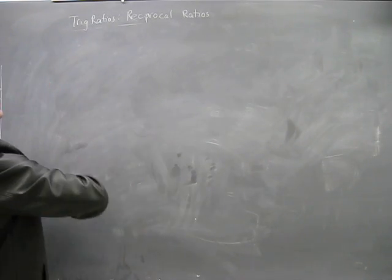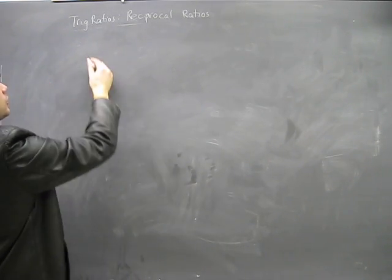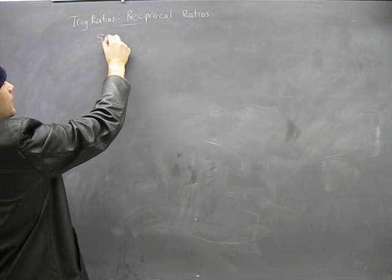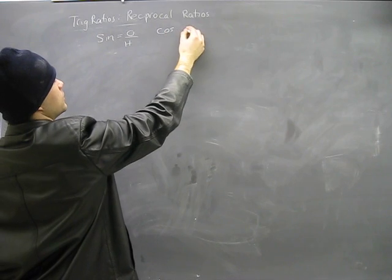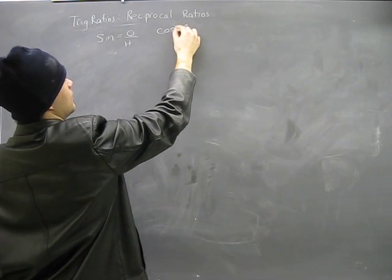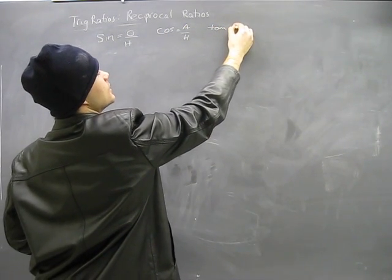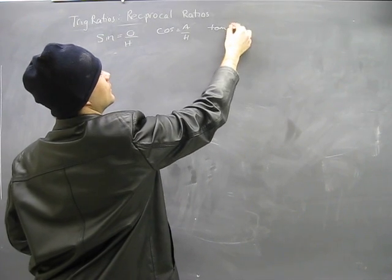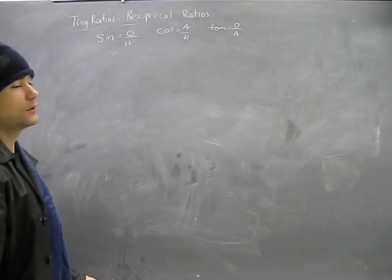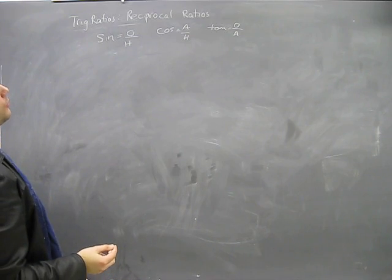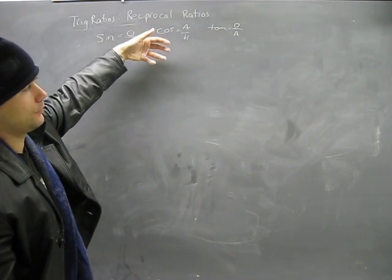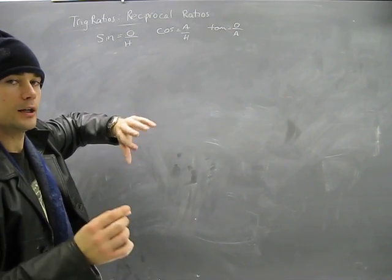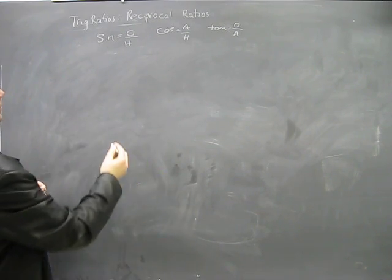What do we have? We have our regular trig ratios which are: we have sine which is opposite over hypotenuse, we have cosine which is adjacent over hypotenuse, we have tangent which is opposite over adjacent.